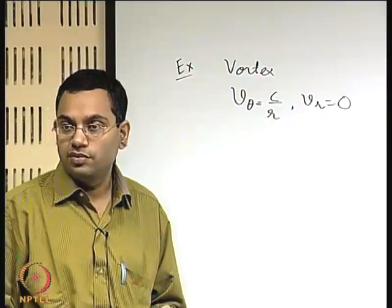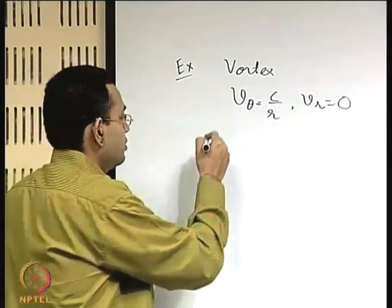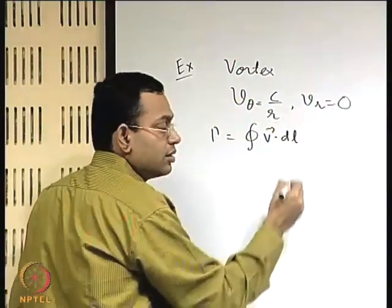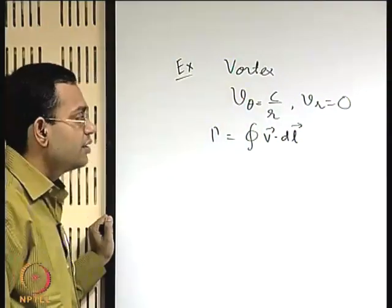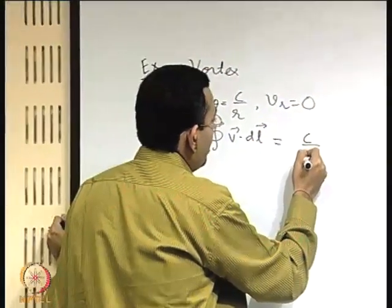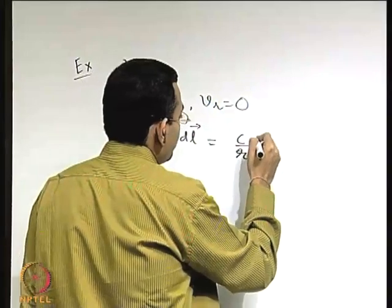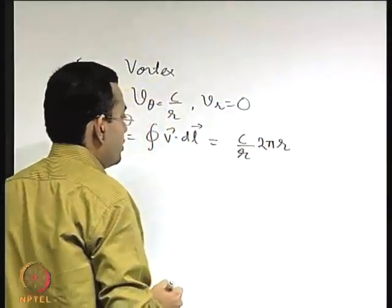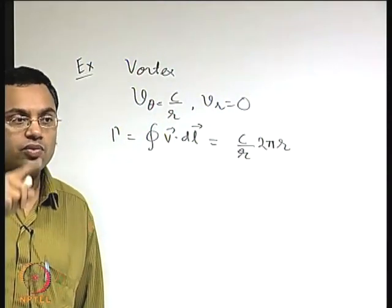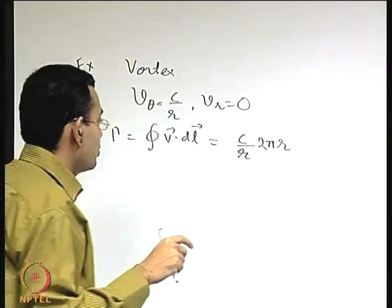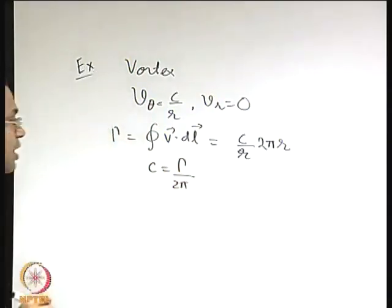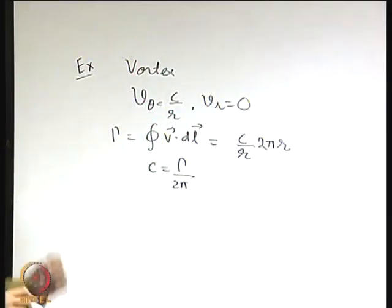The strength of the vortex is circulation. What is the circulation? Recall: it is C/r × 2πr. If you take a circle of radius r and find the circulation around it, then C = γ/2π, where γ is the strength of the vortex or the circulation.